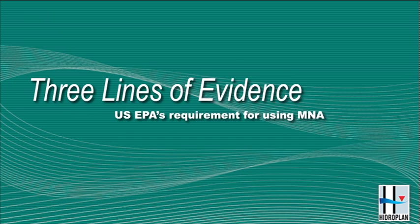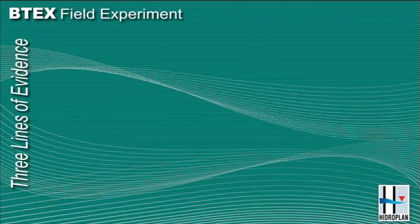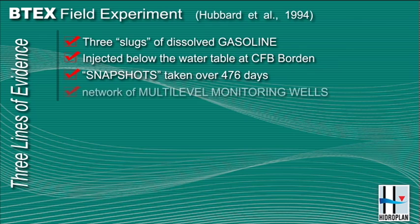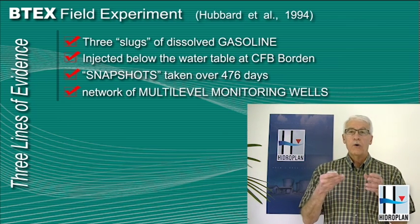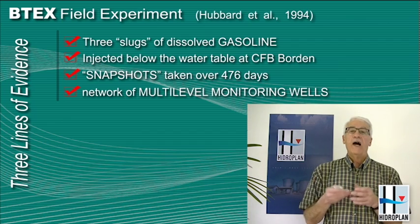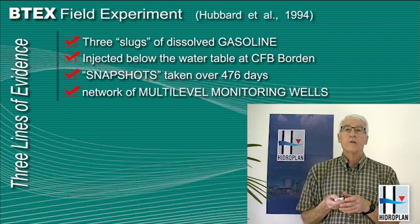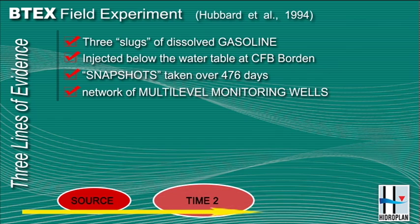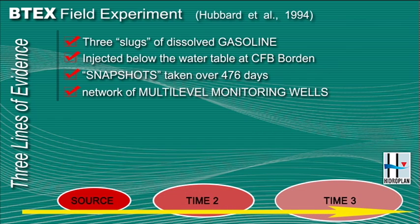We're going to focus on a field experiment we call the BTX field experiment. It was conducted by a student starting in about 1990, and this student was able to inject three masses of water, each mass containing a different dissolved set of hydrocarbons as well as some chloride as a tracer of the groundwater flow. So again it's not a real situation — there's no NAPL source zone. We've simply tried to create a slug or a mass of water that has a similar concentration we might expect near a source of contamination, and we want to then watch how those chemicals evolve over time and see if they undergo natural attenuation.